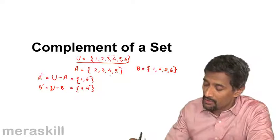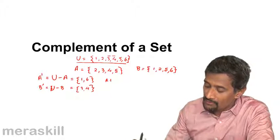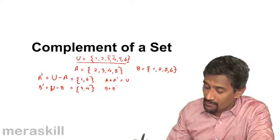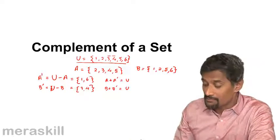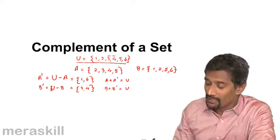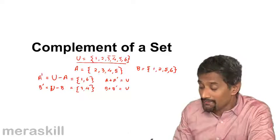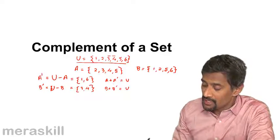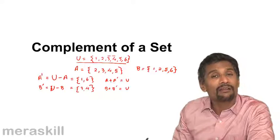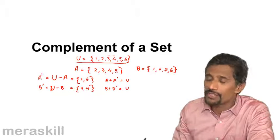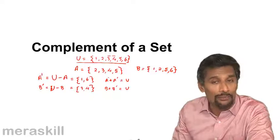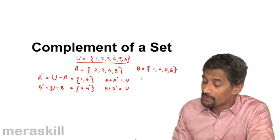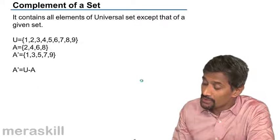That means always remember a set along with its complement will always be the universal set. But also remember one thing. A set and its complement do not have anything in common. So if you see a particular set A and its complement are disjoint sets because they don't have any element in common. So this is a basic understanding of what you mean by complement of a set.